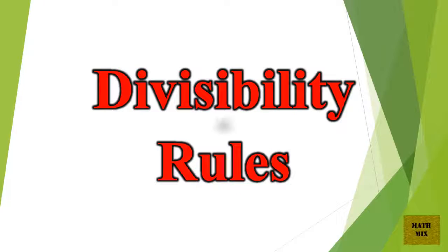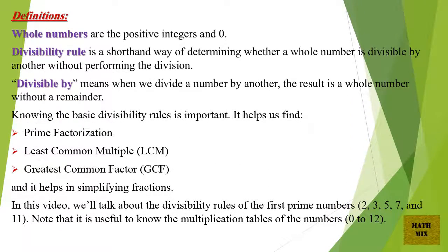Divisibility Rules. Definitions. Whole numbers are the positive integers and zero. Divisibility rule is a shorthand way of determining whether a whole number is divisible by another without performing the division.